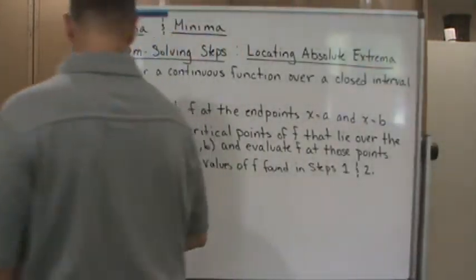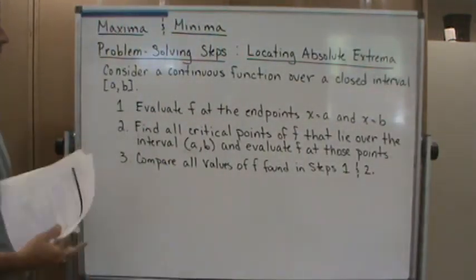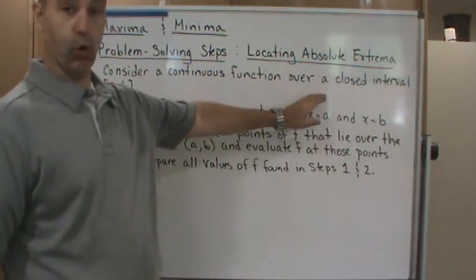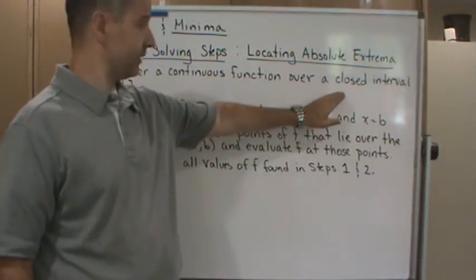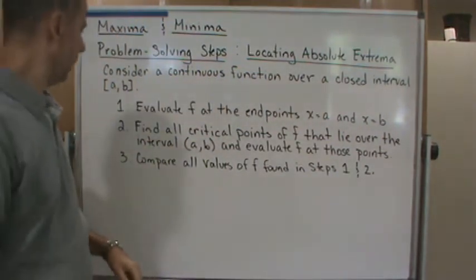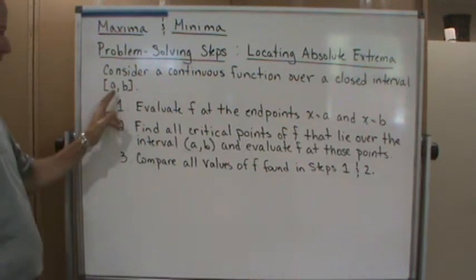Okay, so here are the steps. Again, we're considering a continuous function over a closed interval. The key is that this is a closed interval and we're dealing with a continuous function, the closed interval (a, b).